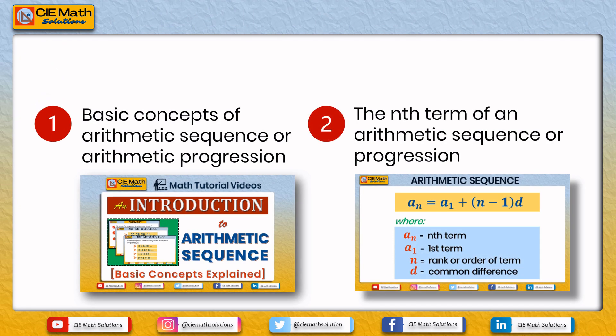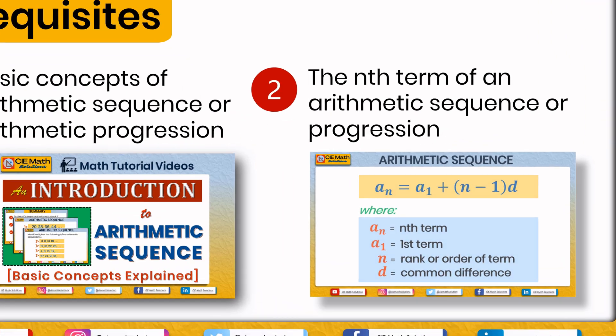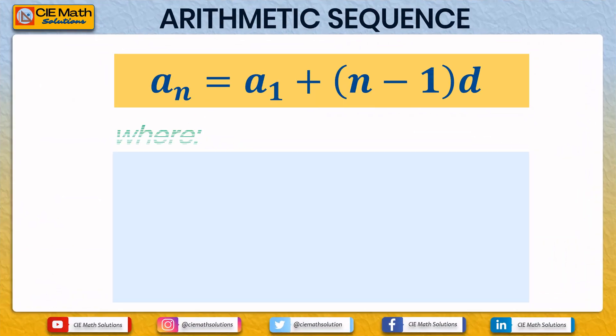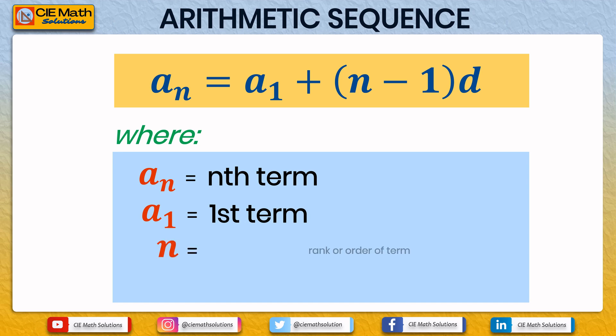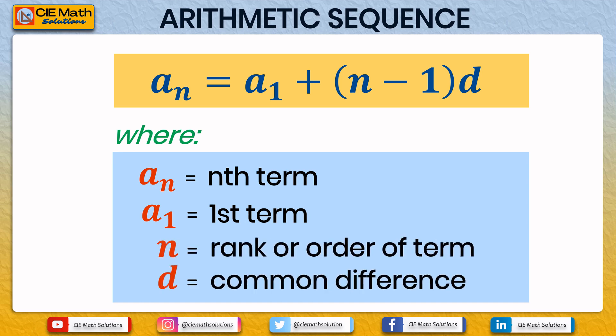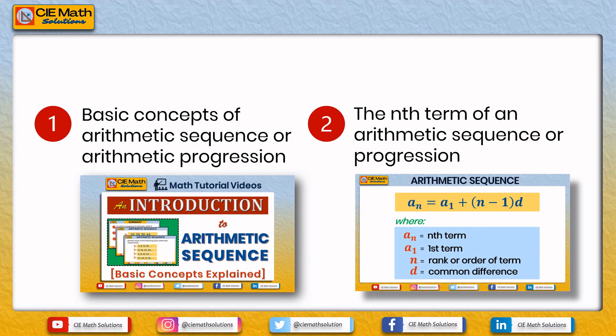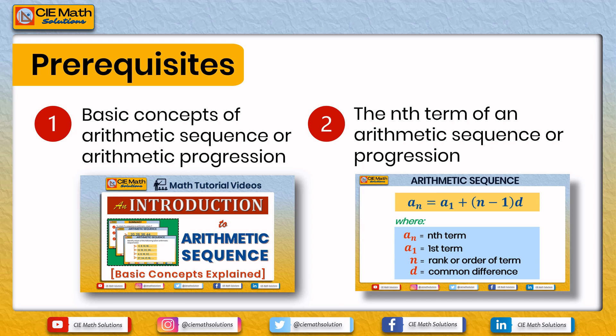For the second prerequisite concept, the nth term formula of an arithmetic sequence is: an equals a1 plus n minus 1 times d. Here, an is the nth term, a1 is the first term, n is the rank or order of the term, and d is the common difference. If you would like to study more about these prerequisite concepts, you may click the link above this video or in the description below.